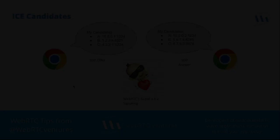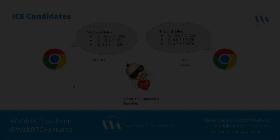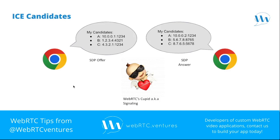We will look at how ICE candidates are gathered and what is the most efficient way to work with them. An ICE candidate is nothing more than an IP address and a port, and gathering ICE candidates is the process of finding out all the possible combinations of IP and port where a peer is available for new connections.